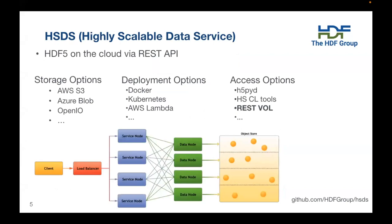I initially thought I'd need to do a primer on HSDS, but thankfully the previous speaker did that for me. What I want to point out in particular is HSDS's data node system. You'll notice it has multiple data nodes, which is important for a special feature of the REST VOL, because those data nodes can access different objects in the object store in parallel. And because they break up one HSDS dataset into many different objects — one for each of its chunks — that can come in very handy with certain operations.